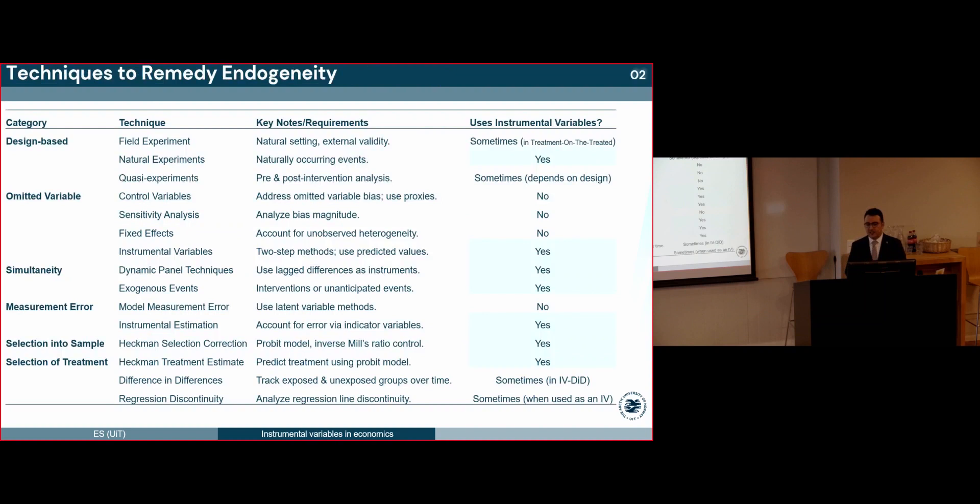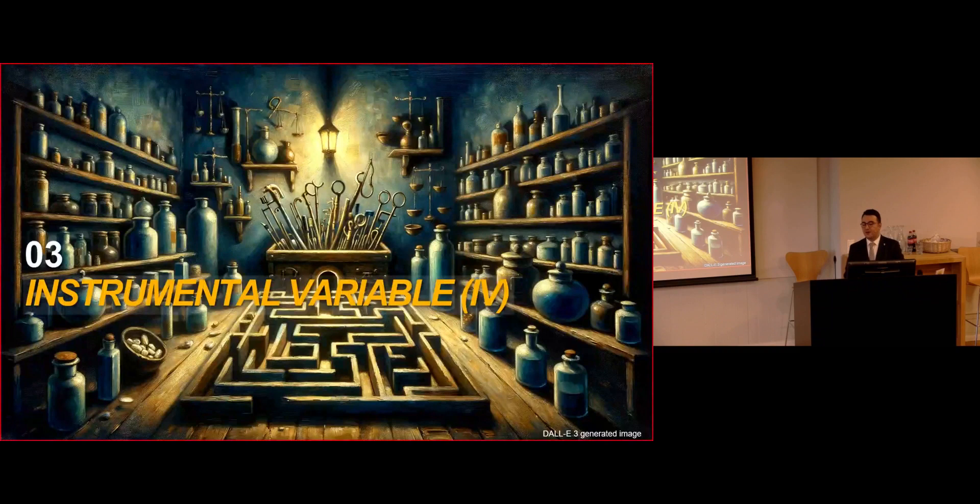It's known that many studies broadly address endogeneity without pinpointing its specific causes. But why does it matter? Because each cause requires a unique solution. And sometimes, multiple causes can influence one's study. It's essential to precisely identify and address the right cause, ensuring our research is both accurate and effective. Addressing endogeneity is central to econometric research, and there is a suite of techniques to manage this. As presented in this table, the pivotal role of instrumental variable is hard to miss. From the two-step method and dynamic panel techniques to the Heckman models, which I have used in my PhD, these variables are essential in countering biases. So, one of the beauties of instrumental variables lies in their adaptability to various estimation techniques.